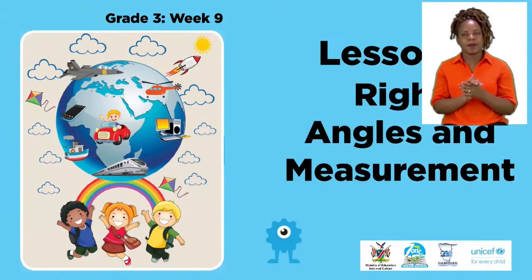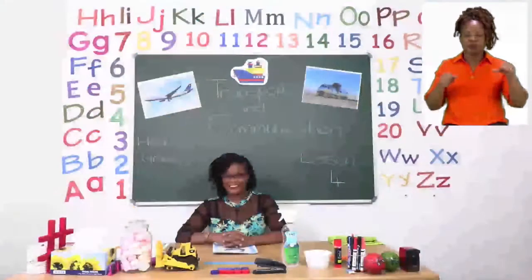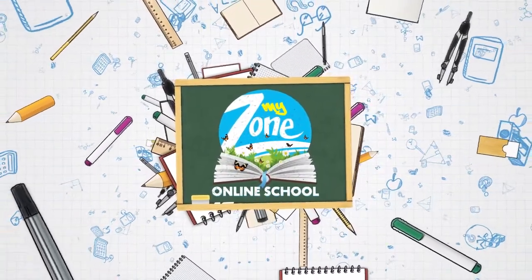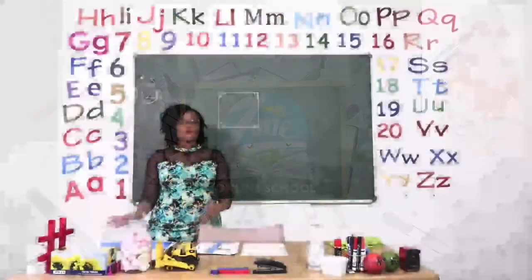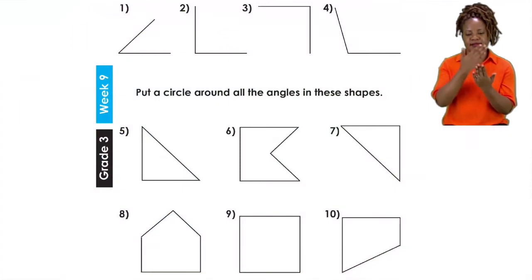For today's lesson we will be talking about right angles and measurements. For our first exercise today, boys and girls, let us turn to page 12. On page 12 we are going to be doing right angles. Everyone let's say right angles. Now we are told that a right angle is equal to a corner of a square. And I want to explain that before we try and find the right angles. So let's take a look at the board.